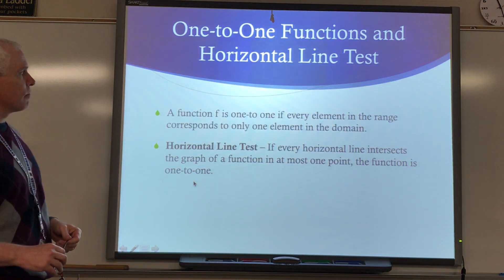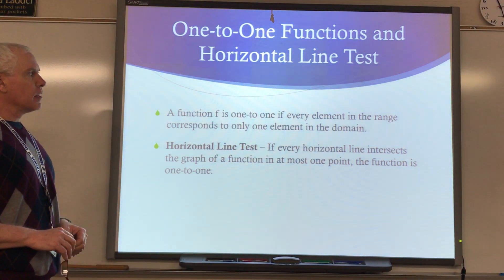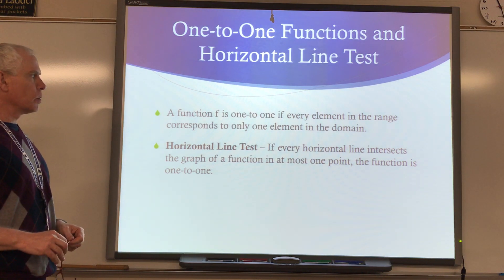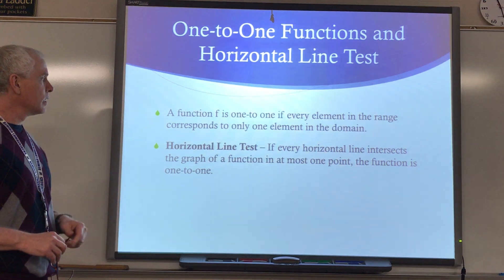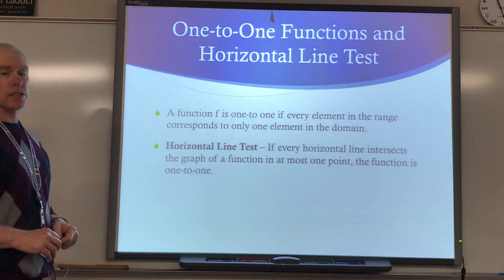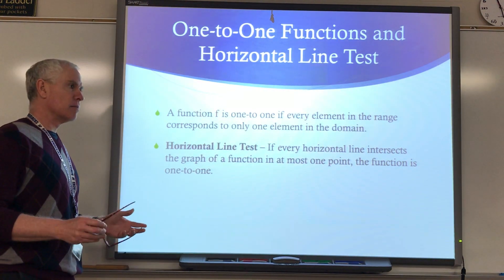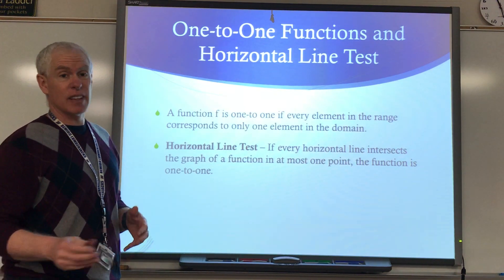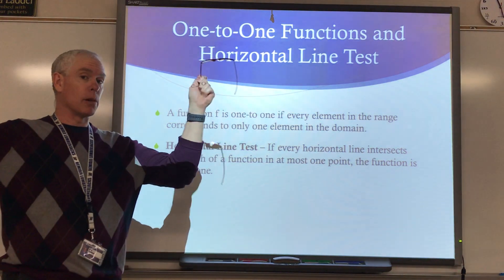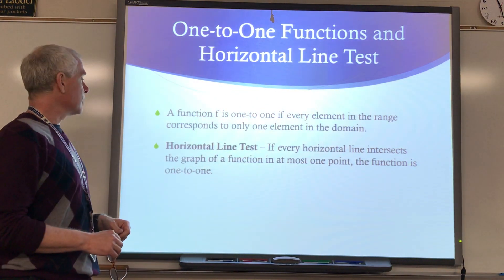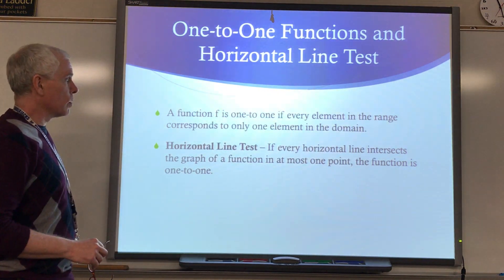A function f is one-to-one if every element in the range corresponds to only one element in the domain. What that means graphically is it passes the horizontal line test. So if I think of the line y equals x, that definitely passes the horizontal line test. If I think of a parabola, y equals x squared, that does not pass the horizontal line test, so it's not a one-to-one function.